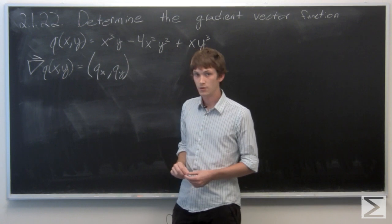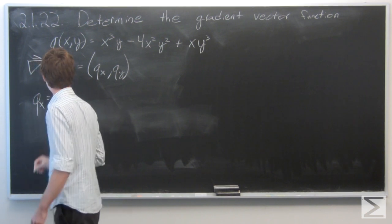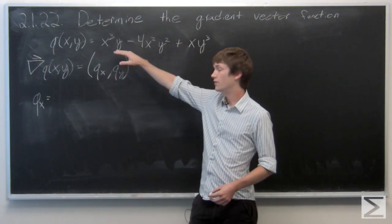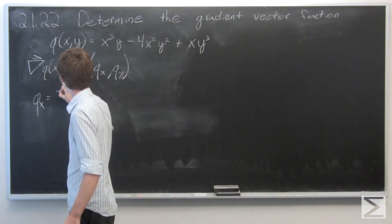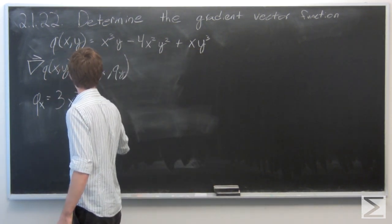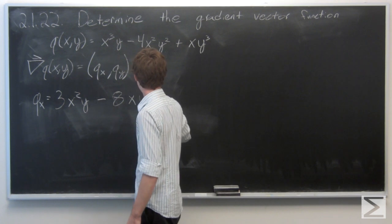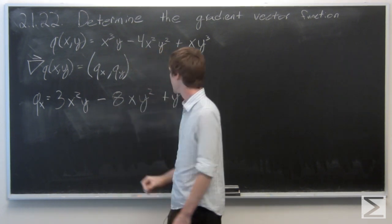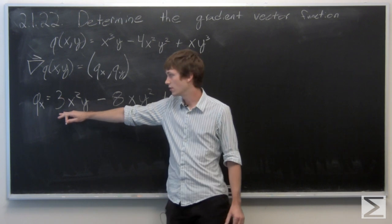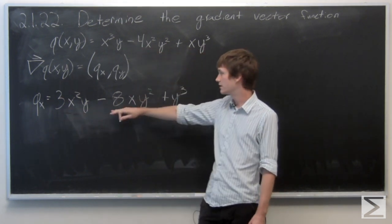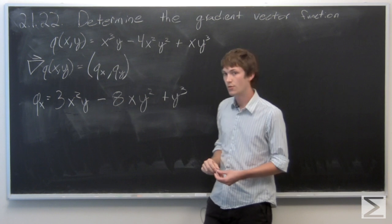So first we're going to find the partial derivative of q with respect to x. We hold the y's as constant and take the derivative of x in the normal way. We see that the derivative of the first term is 3x squared y, the derivative of the second term is negative 8xy squared, and the derivative of the third term is y cubed, all with respect to x.